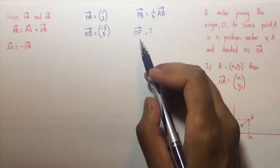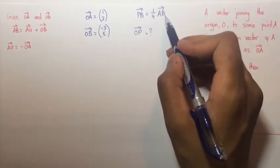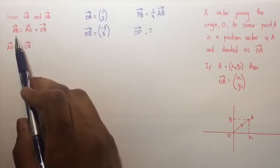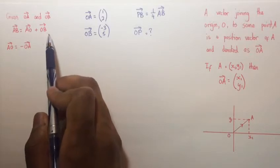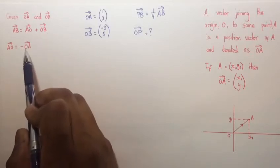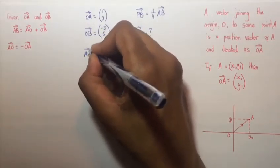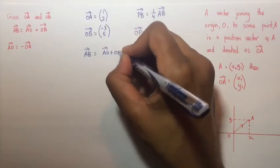Now before we can find OP, we must first find the vector AB. Now given vectors OA and OB, vector AB is simply vector AO plus OB and vector AO is simply the negative of vector OA.